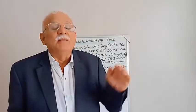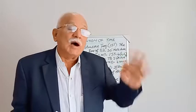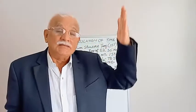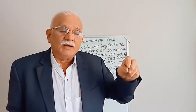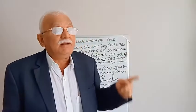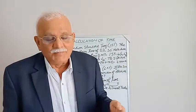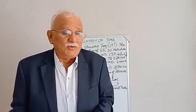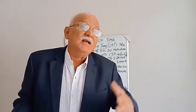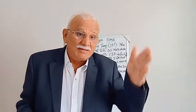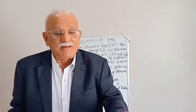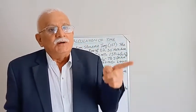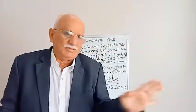Greenwich Mean Time is also known as Coordinated Universal Time (UTC). Greenwich is a place in England, and at 12 PM the sun's rays fall directly on that location. Our Indian Local Mean Time and Local Apparent Time are calculated based on Indian Standard Time, which is the Local Mean Time at which the sun falls directly on the meridian of 82.5 degrees East longitude.